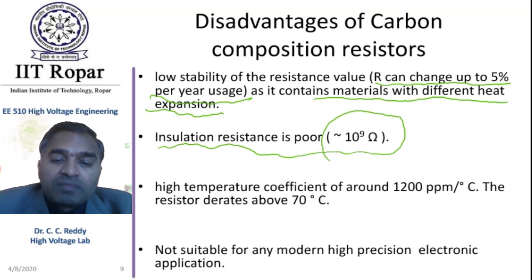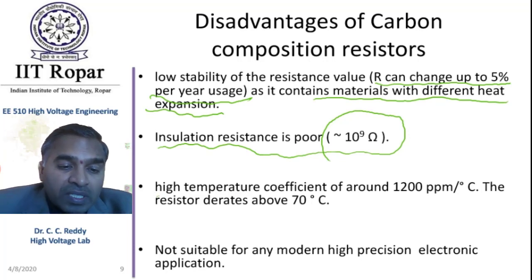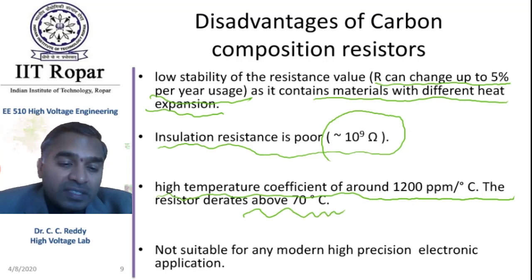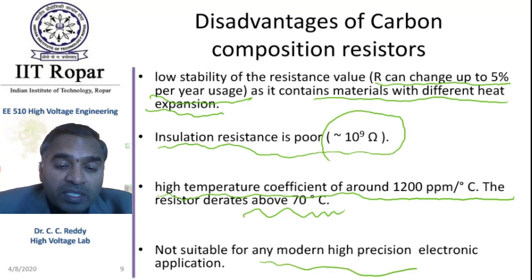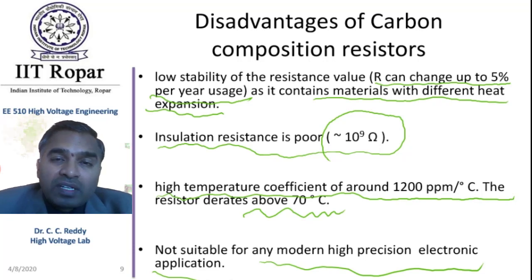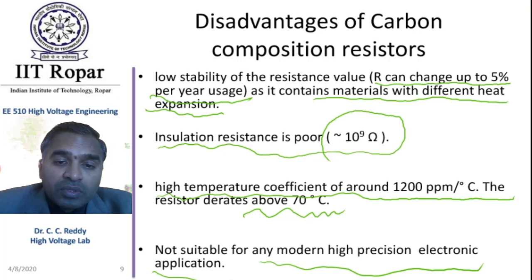Insulation resistance is actually poor — 10 to the power of 9 ohms — so achieving higher resistances is difficult. One more problem is a high temperature coefficient of around 1200 ppm per degree centigrade, and beyond 70 degrees centigrade it gets derated. So these resistors are not suitable for high precision electronic applications. But for electrical high voltage applications, we are mainly concerned about self-inductance, self-capacitance, and high energy capacity — which is very important compared to wire wound — and that is one thing in favor of carbon composition resistors.